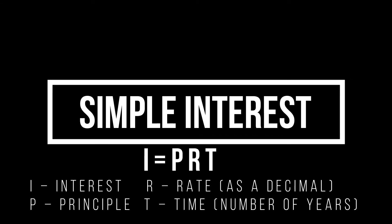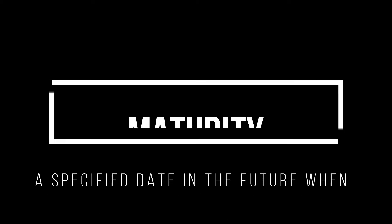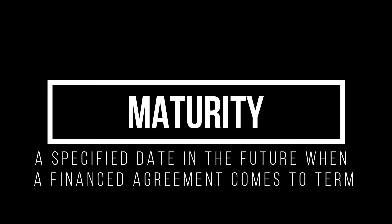The next vocabulary word is simple interest. The formula is I = P × R × T, where I represents the interest earned, P represents the principal (the initial investment), R represents the rate expressed as a decimal, and T represents time in years. Maturity is a specified date in the future when a finance agreement comes to term — for example, a three-month CD is fully matured after three months.